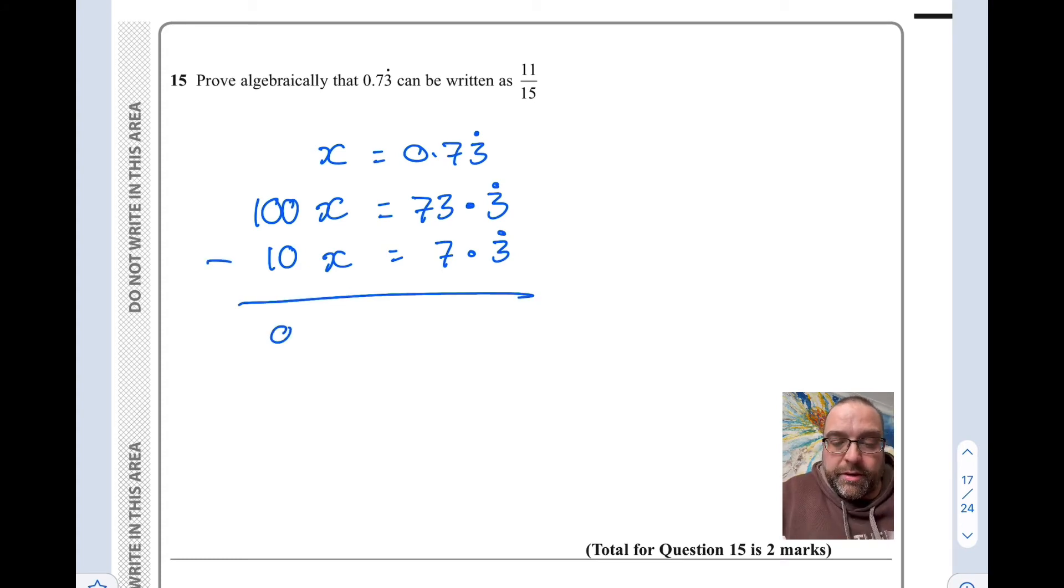100x take away 10x is 90x and 73.3 recurring take away 7.3 recurring. This is where the recurring part disappears because when you take one recurring amount away from another recurring amount, you're left with nothing.